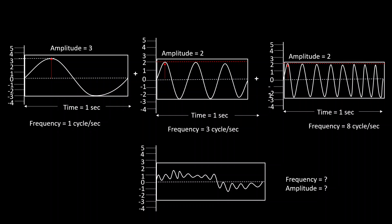This is where the magic of Fourier transform comes in. Fourier transform allows us to analyze these complex signals by decomposing them into a sum of sinusoidal waves of different frequencies and amplitudes. This analysis is very crucial in image processing.